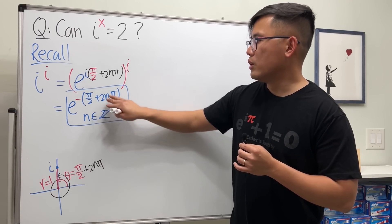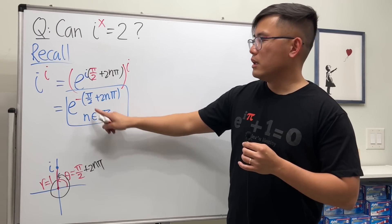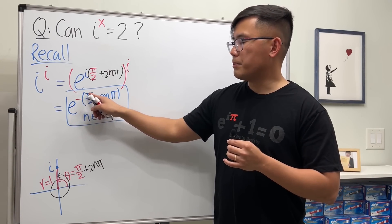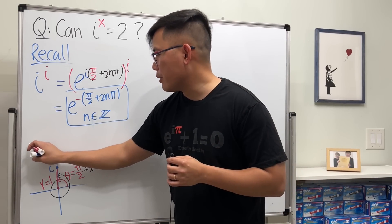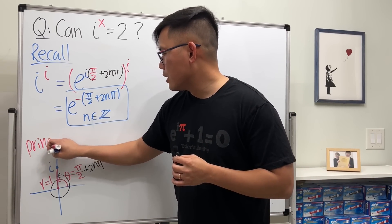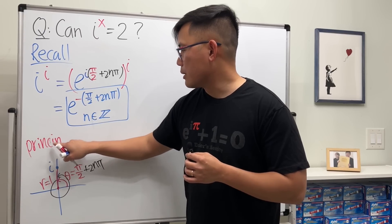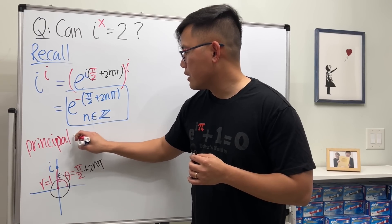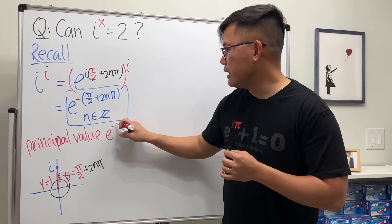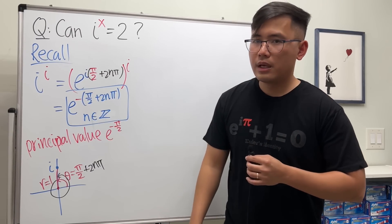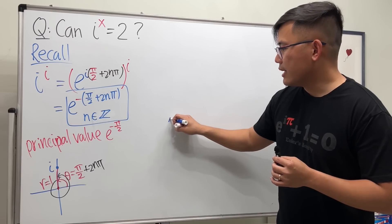And when n equals zero, meaning we don't have this part, we just get e to the negative π over 2, and that's the first answer called the principal value. So let me write that down: the principal value of i to the i is e to the negative π over 2.